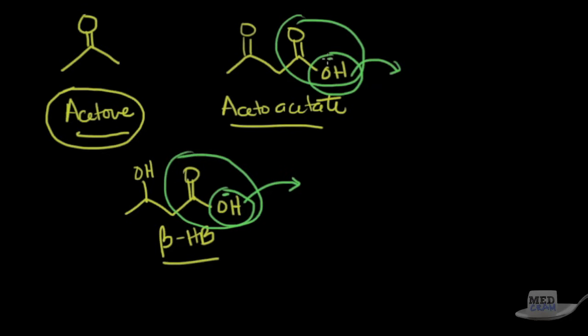And when it does, what you have left behind is the conjugate base, which is negatively charged, which is what's going to account for your anion gap, and if you want more information on the anion gap, please see our lectures on ABG interpretations and medical acid base.